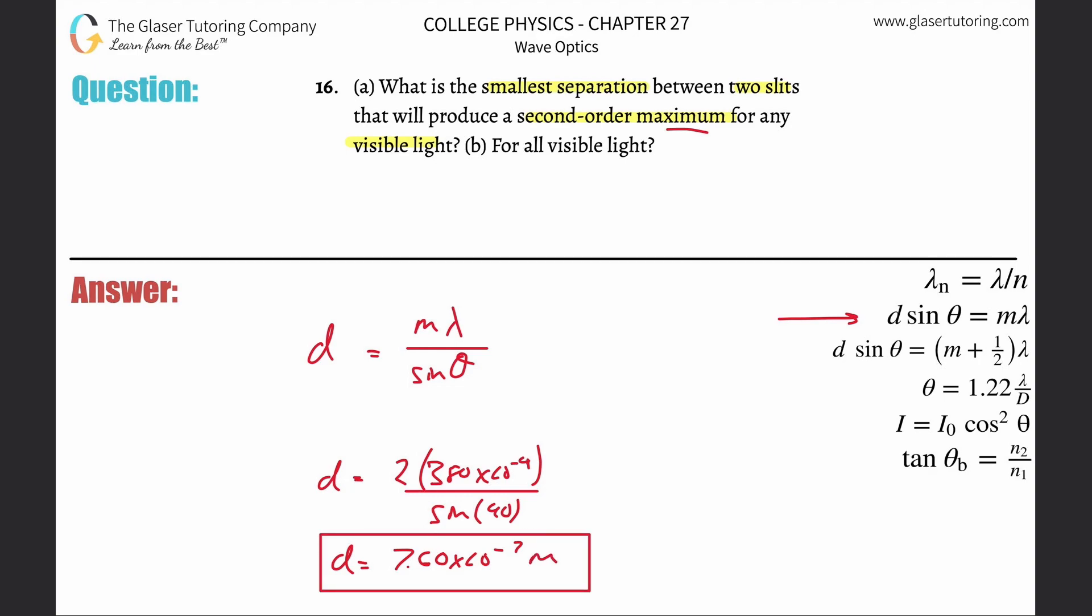And now it says for all visible light, for letter b. Well, all visible light, we have to go to the largest value of sine—we're going to keep that at max—but now we're also going to the maximum wavelength because now we need it for all visible light.